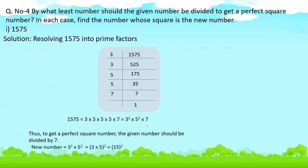Let's do Question 4: By what least number should the given number be divided to get a perfect square number? In each case, find the number whose square is the new number. Let's take 1,575. Its prime factors are 3 × 3 × 5 × 5 × 7. Since 7 is a single unpaired factor, it is not a perfect square. To get a perfect square, the given number should be divided by 7. The new number will be 3² × 5² = (3 × 5)² = 15². The number whose square is the new number is 15.